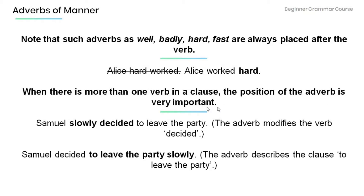When there is more than one verb in a clause, the position of the adverb is very important. In 'Samuel slowly decided to leave the party,' the adverb 'slowly' modifies the verb 'decided,' not 'leave.' In 'Samuel decided to leave the party slowly,' the adverb 'slowly' describes the clause 'to leave the party,' not 'decided.'